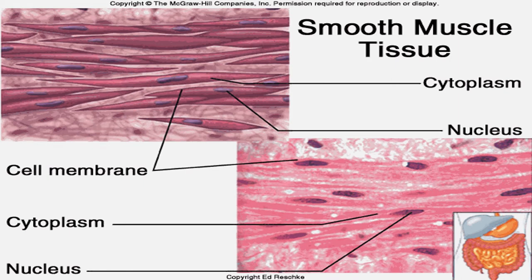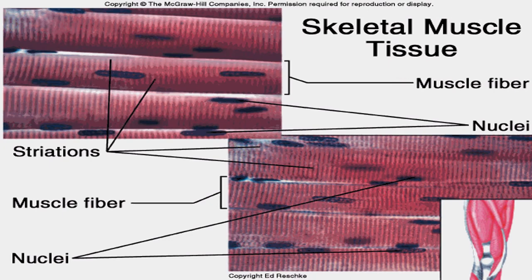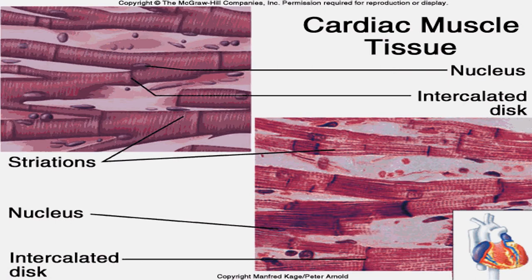Smooth muscle is found in the walls of the digestive tract, urinary bladder, arteries, and other internal organs, and is responsible for involuntary movements such as peristaltic activity in the digestive system and constriction of arteries. Skeletal or striated muscle is attached to bones by tendons and is responsible for voluntary body movements. Cardiac muscle forms the contractile wall of the heart; intercalated discs relay impulses from cell to cell and help synchronize heart contraction.